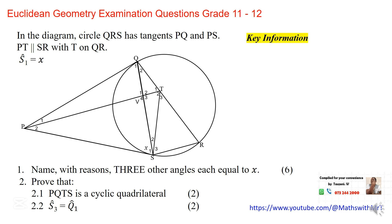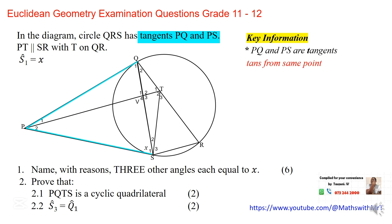We are told that there are two tangents given. What do we know about tangents? Tangents from the same point are equal from where they touch the circle. So in this diagram, angle Q1 and angle S1 are equal to each other because of tangents from the same point. Those two tangents make triangle PQS an isosceles triangle.